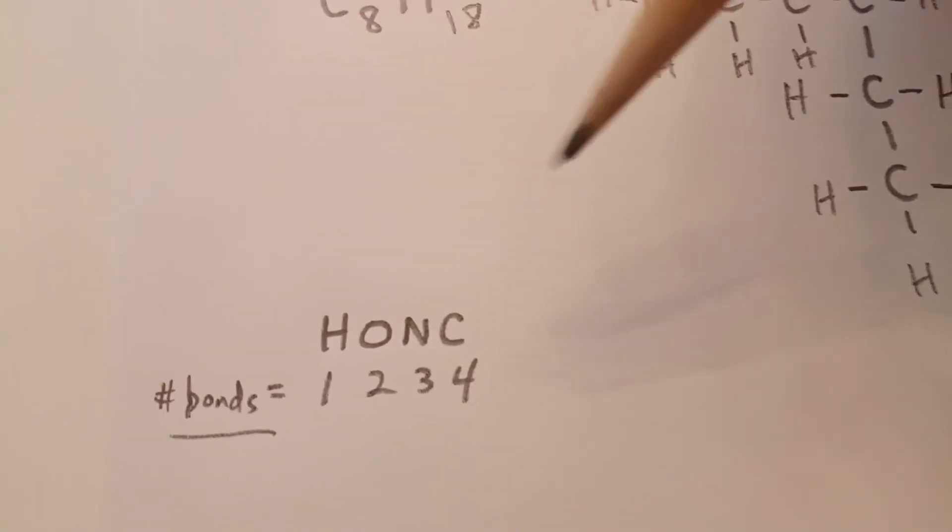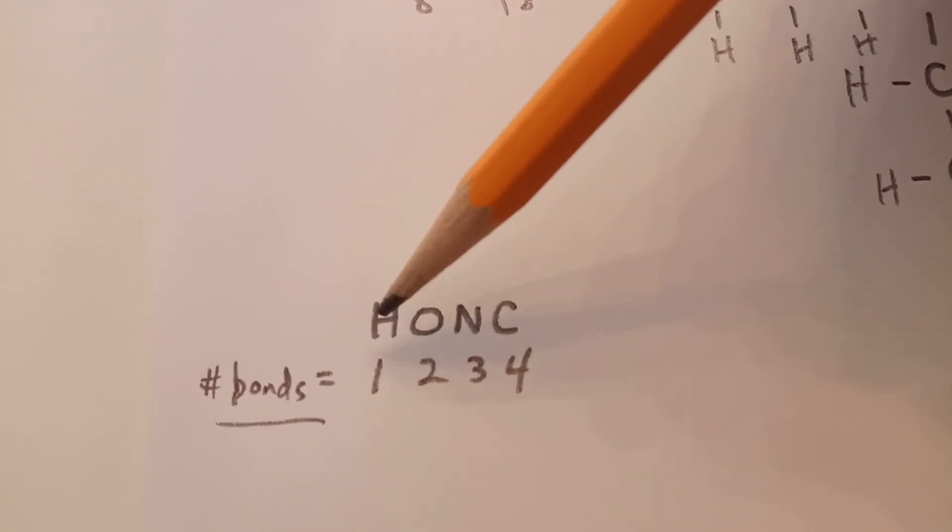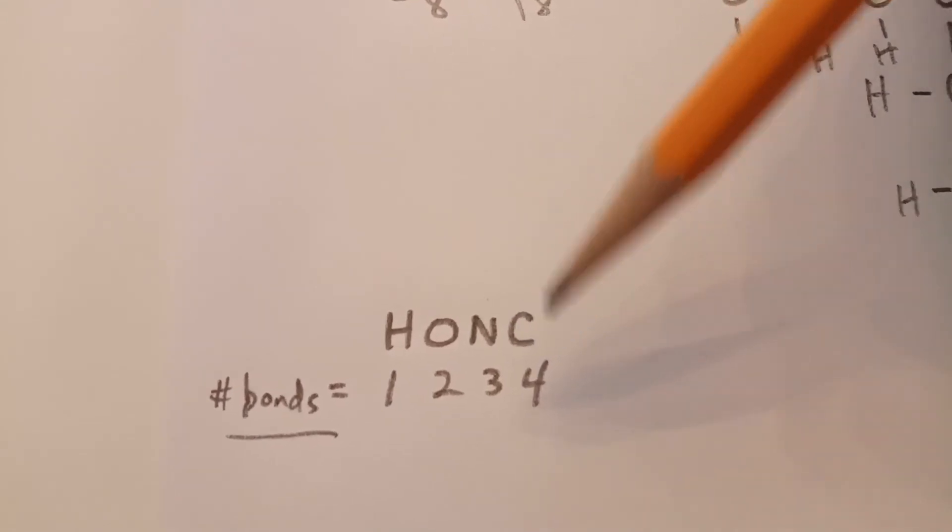And if you write them in order, H-O-N-C, and then think of counting off left to right, one, two, three, four, that's the number of bonds. Hydrogen always has one bond. Oxygen always has two bonds. Nitrogen always has three bonds. Carbon always has four bonds.